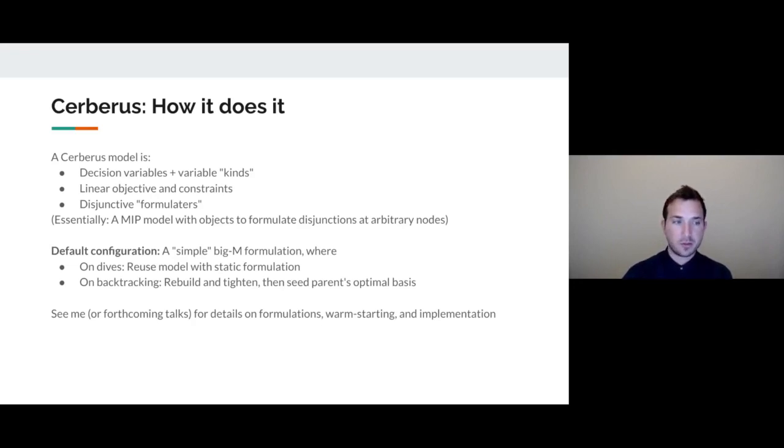By default, Cerberus uses a simple big M formulation, and on dives as it goes deeper into the search tree, it will just reuse the same model in memory with a static formulation. However, when it backtracks, it will rebuild the model, it will tighten it for the current node, and additionally it will seed the parent node's optimal basis to try to take advantage of warm starting.